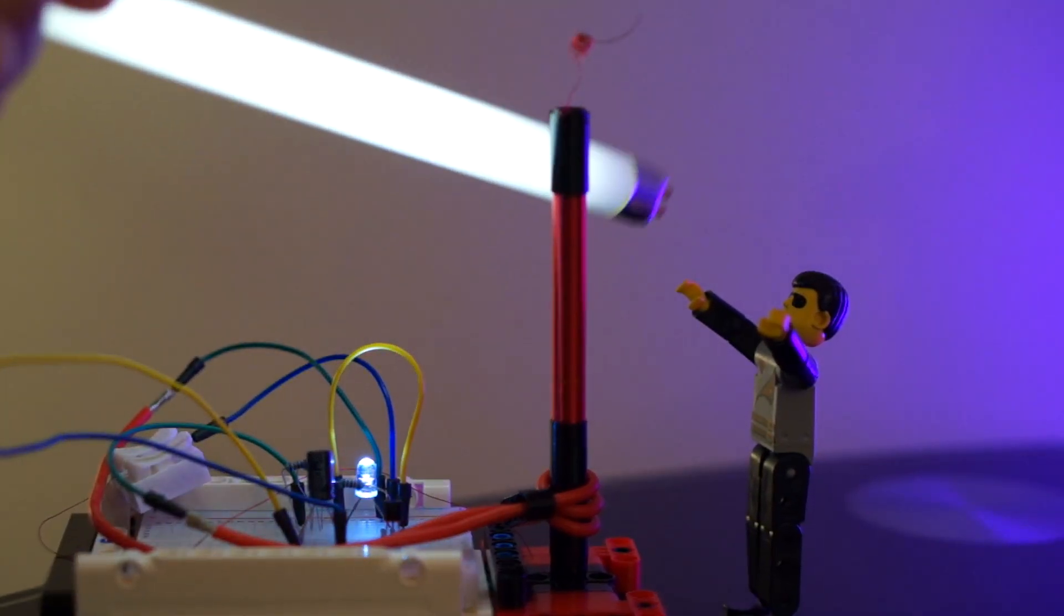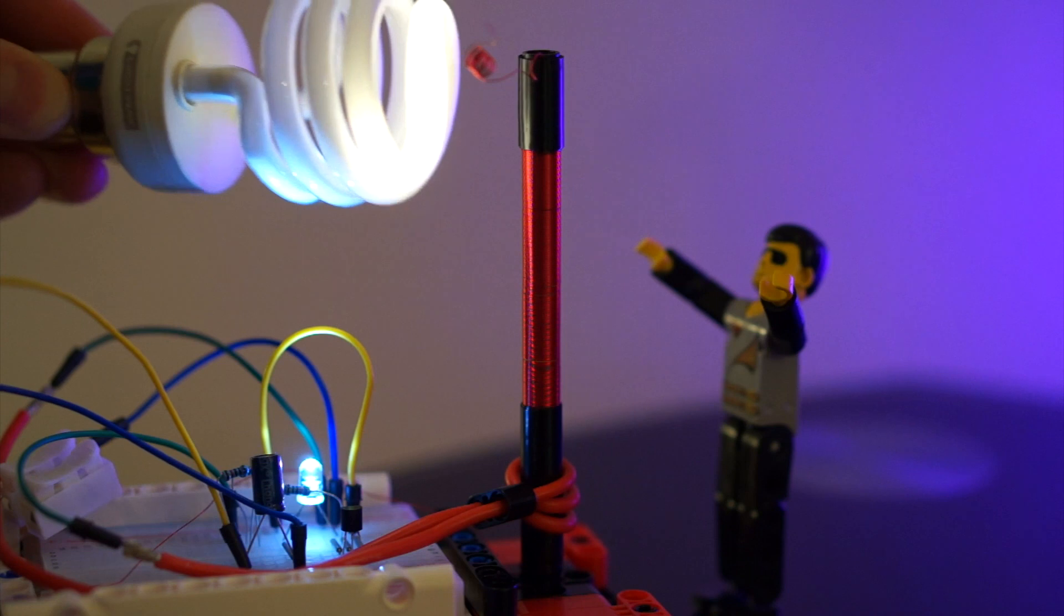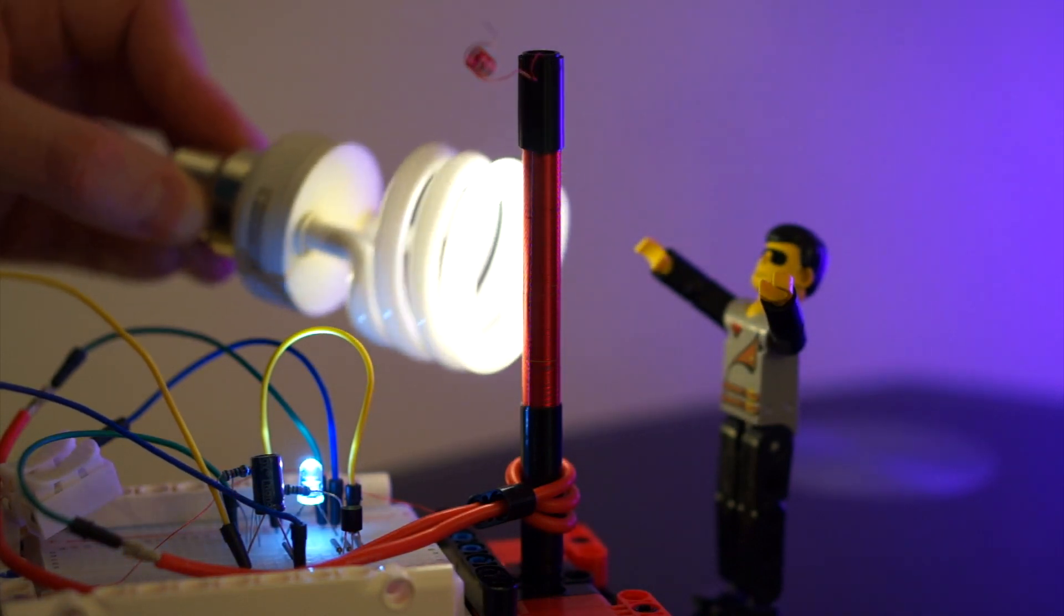The electric field created by the secondary tower can excite gases like those found in fluorescent tubes.